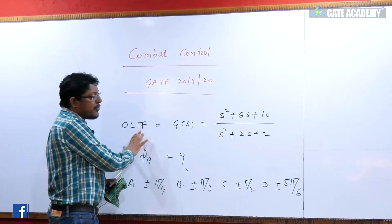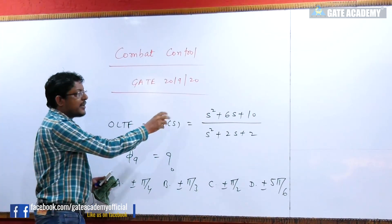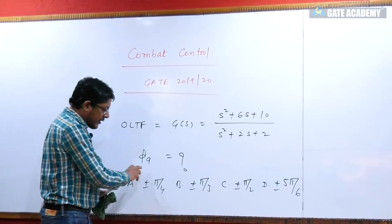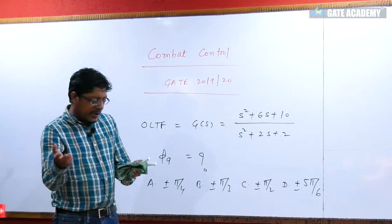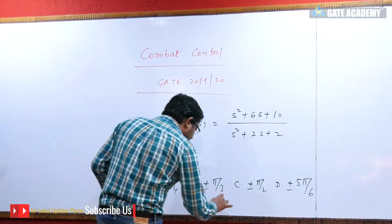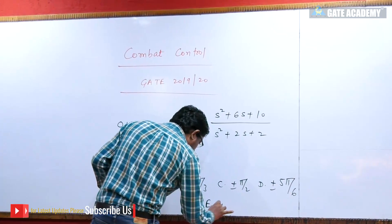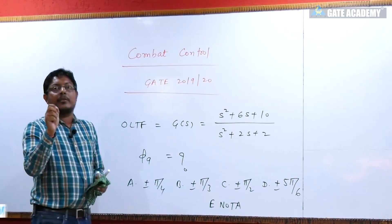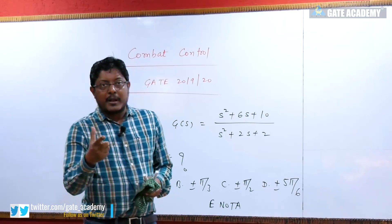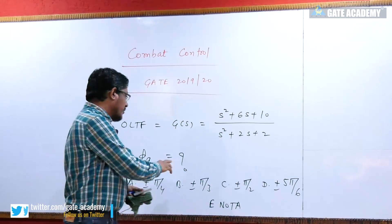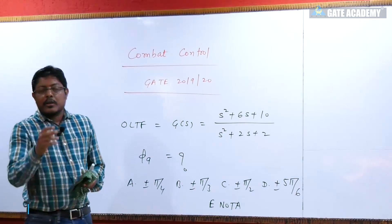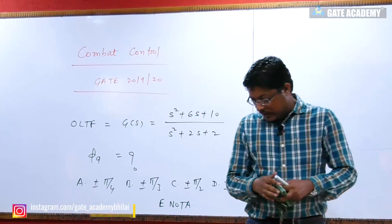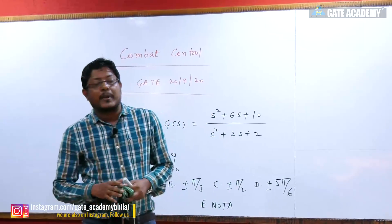In this case, the question has given s² + 6s + 10 and s² + 2s + 2. I will find the answer, with one option being 'none of the above.' This is from the GATE instrumentation branch and there were 4 options shown. Many people said they would not attempt all answers, but I will go through all of them.